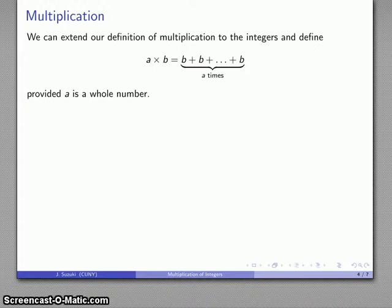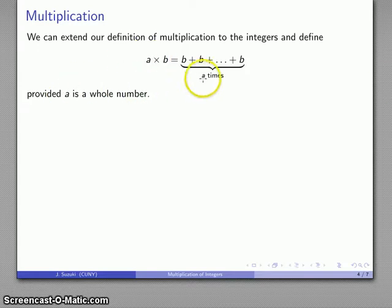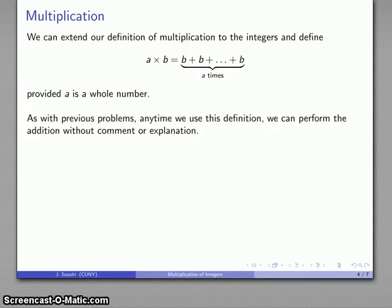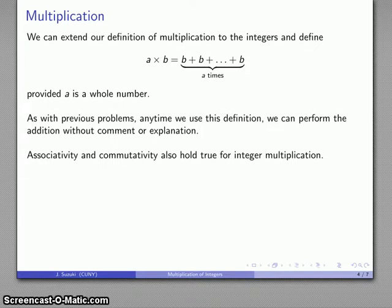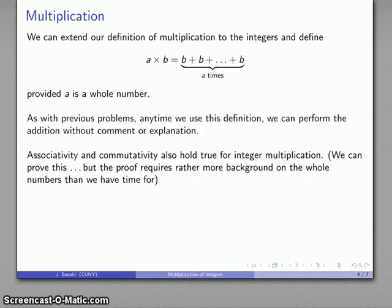One of the things this shows up in is that it allows us to extend our definition of multiplication to the integers. Remember our definition for whole numbers: a times b is the sum of a b's added together. This only makes sense if a is a whole number — it doesn't make sense to add up negative 5 b's — but if a is a whole number, that sum does make sense. Because addition is part of our definition of multiplication, I can perform the addition without additional commentary. It can be shown that associativity and commutativity also hold true for integer multiplication, and assuming those will make our process a lot easier.